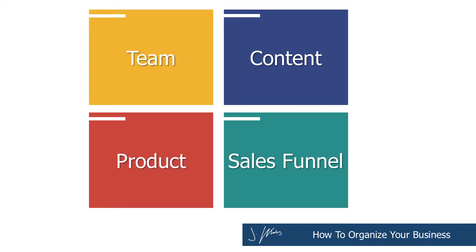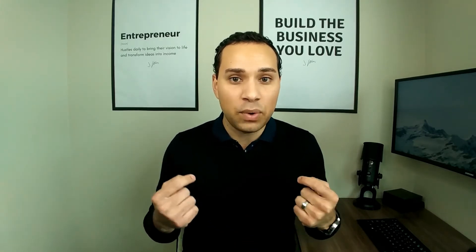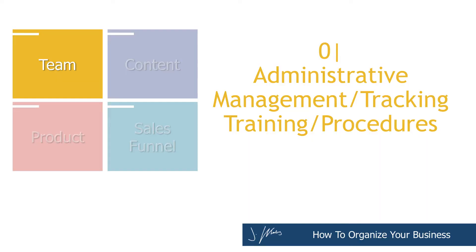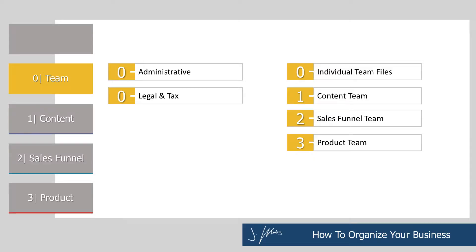The purpose of these four quadrants is to help you stay organized, even if it's just you right now, and also help your team stay organized so everyone has an intuitive way of knowing where different types of files are. The first quadrant is team, and team is where all of your training and your administrative and tax documents go. Inside of team, we have a couple of folders. The first folder is administrative, and that's for all the tax and legal stuff that you as the business owner have to take care of.